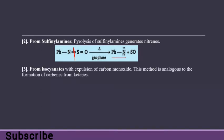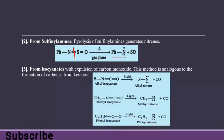From isocyanide with expulsion of carbon monoxide: this method is analogous to the formation of carbene from ketene. If we remove carbon monoxide from alkyl isocyanide in the presence of light, we get alkyl nitrine. Similarly, from methyl isocyanide, removing CO in the presence of light gives methyl nitrine.